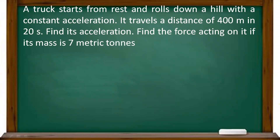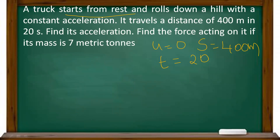A truck starts from rest, so the initial velocity u is equal to 0. It rolls down a hill with constant acceleration, so we will use the equations of motion for uniformly accelerated motion. It travels a distance of 400 meters, so s is equal to 400 meters. In 20 seconds, so t is 20 seconds. We need to find acceleration a.